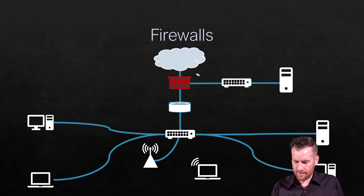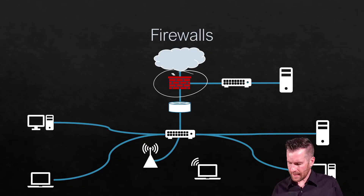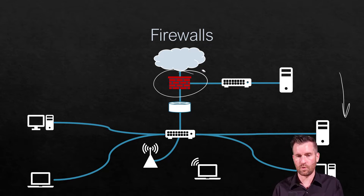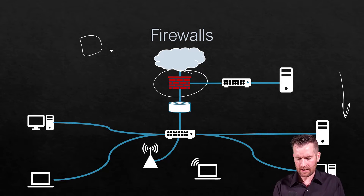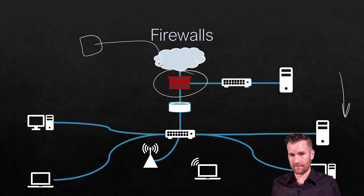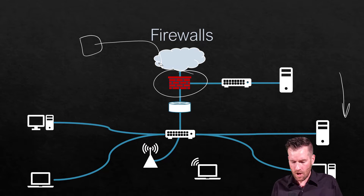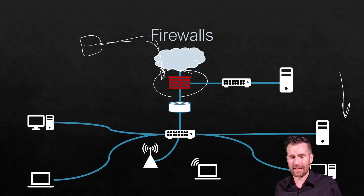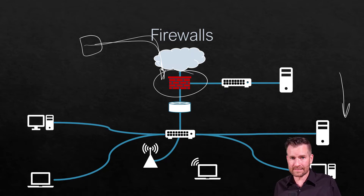Firewalls sit on the outside of your network and protect the inside of your network from the rest of the world, from the rest of the internet. Hackers are constantly trying to break into your network, and the firewall is designed to stop them. Traffic from the outside is not allowed to come into your network unless it's traffic that's been requested.